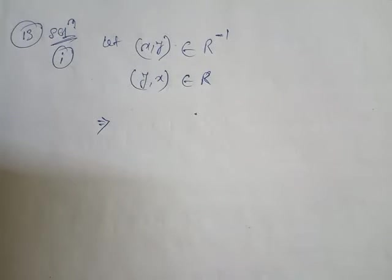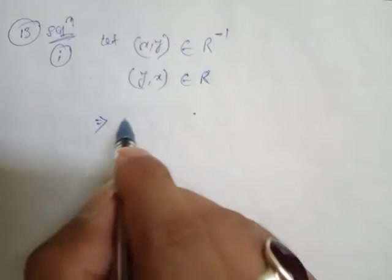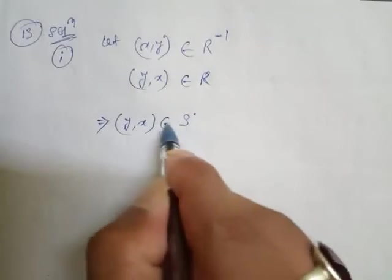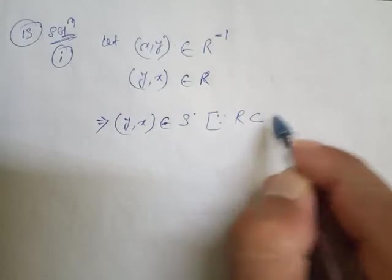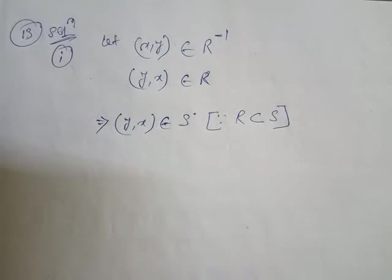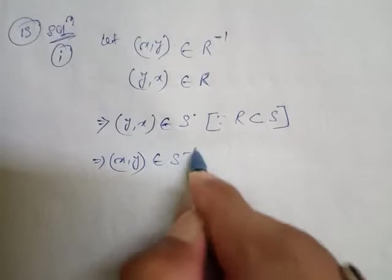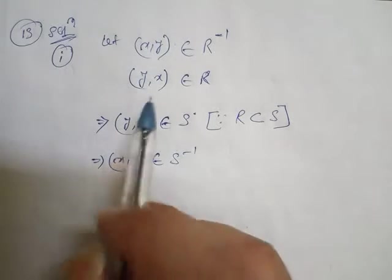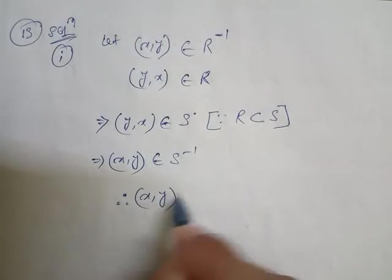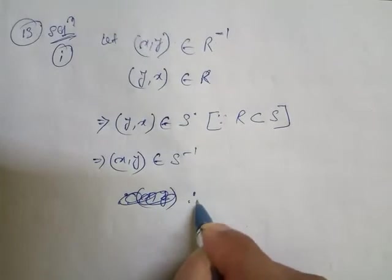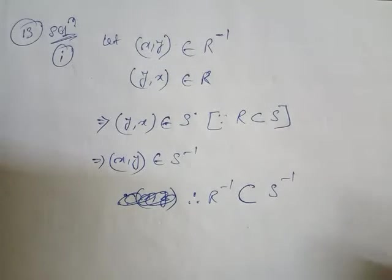In the question it is mentioned that R and S are two relations on any set A. Since R is included in S, in place of y comma x we may also write S. So then x comma y belongs to R inverse, and therefore R inverse is included in S inverse. The first one is proved.